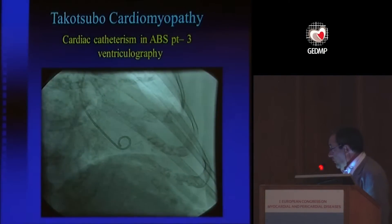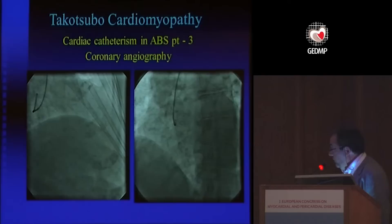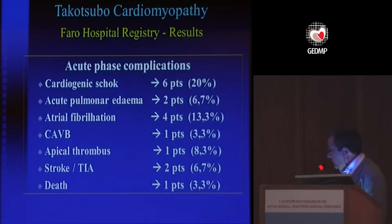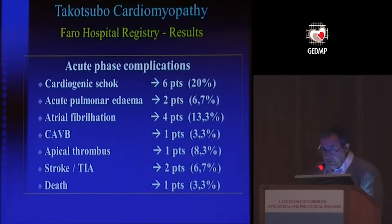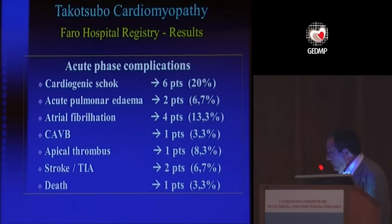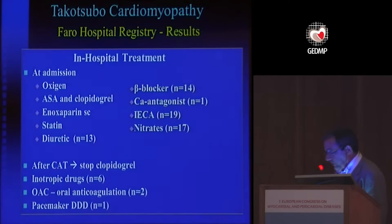In the acute phase, the complications included six patients with cardiogenic shock — so heart failure in the acute phase can be a very important event. There was also one death. This is the only death recorded in this series.